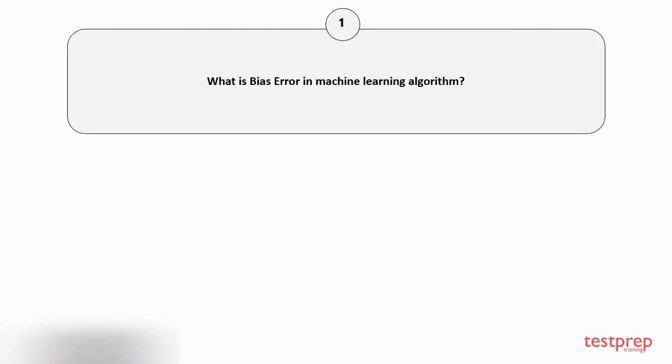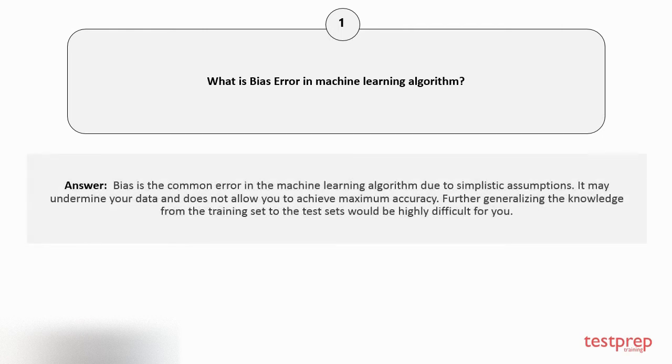Question number one: What is bias error in machine learning algorithm? Bias is the common error in machine learning algorithms due to simplistic assumptions. It may undermine your data and does not allow you to achieve maximum accuracy. Further, generalizing the knowledge from the training set to the test sets would be highly difficult.